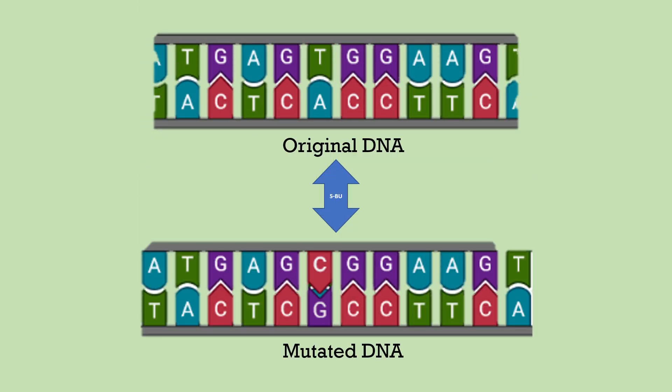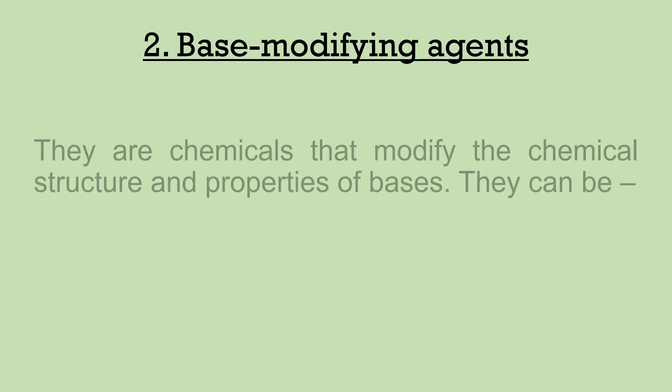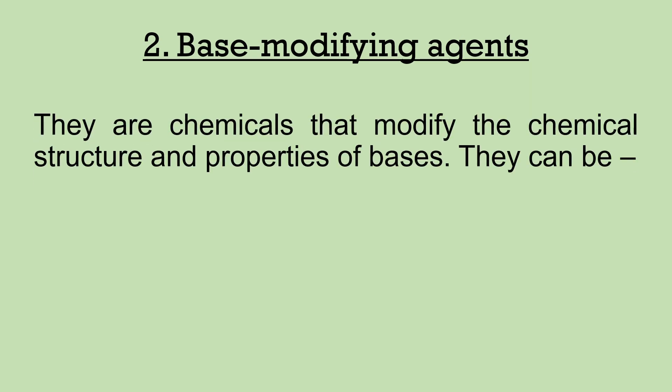This binding with guanine causes alterations in the DNA, creating a transition mutation. This can be reverted back by a second treatment of 5-bromouracil.